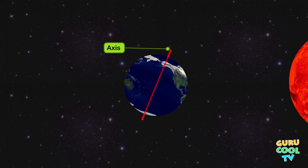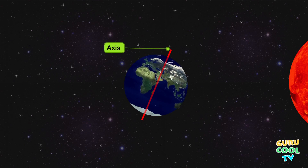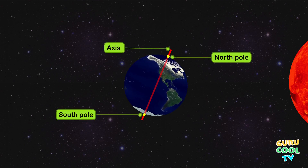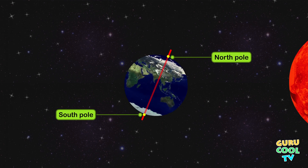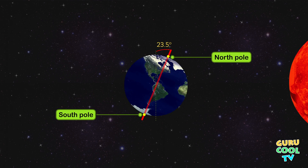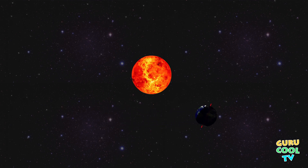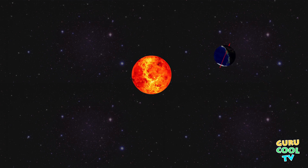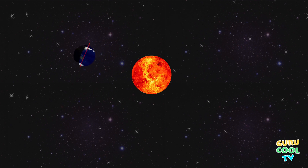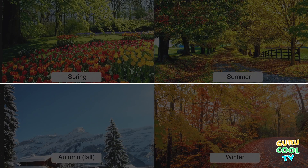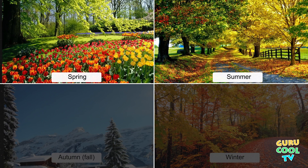The axis of the Earth is an imaginary line on which the Earth rotates. It links the two poles — the North Pole and the South Pole. This axis of the Earth is tilted 23.5 degrees. This tilt causes one hemisphere to get comparatively closer to the Sun and receive direct sunlight, resulting in summer, while the other hemisphere, which is comparatively farther from the Sun, receives slanting rays, thus less intense heat, resulting in winter.